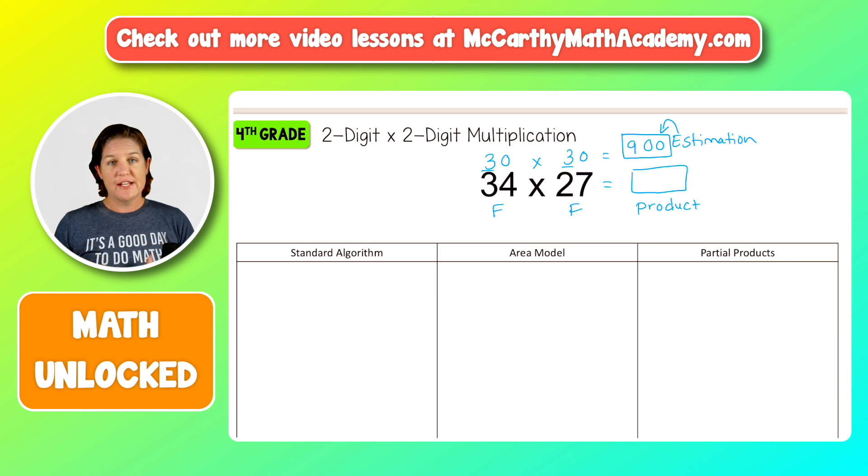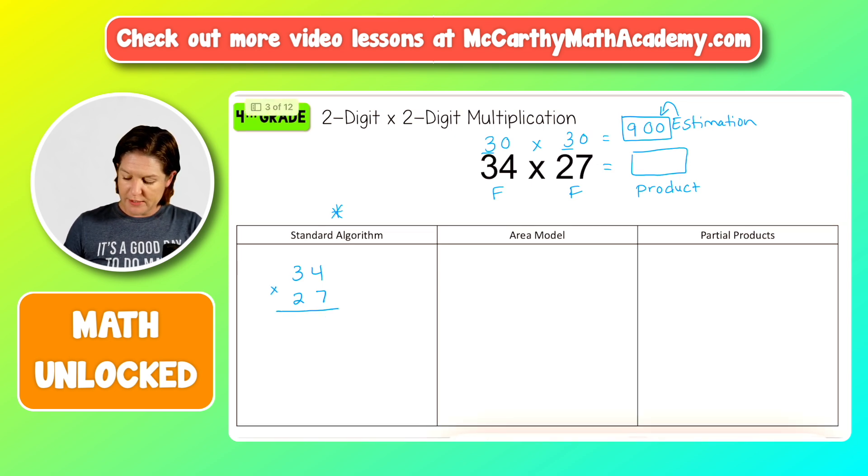Let's start with standard algorithm. Standard algorithm is a way that I learned how to multiply back in school. I'm going to start it because it's a way that typically when they get into fifth grade, sixth grade, this is going to be the way that most teachers are going to take them through. So it is important that they have seen this and that they get going with it. So standard algorithm, what we need to do is line up our digits. So we have 34, we have 27.